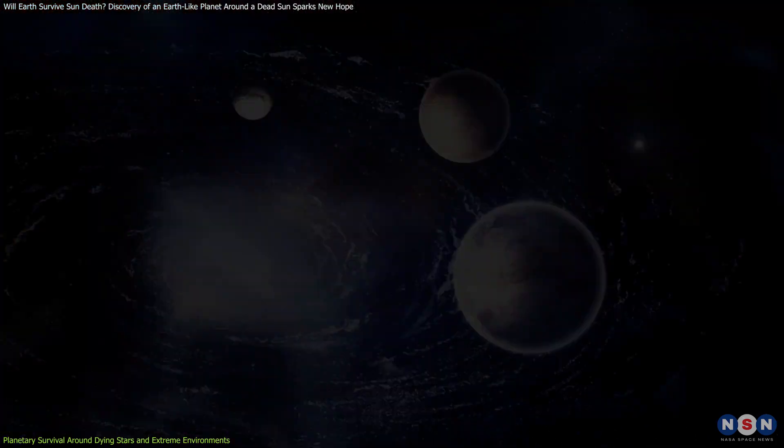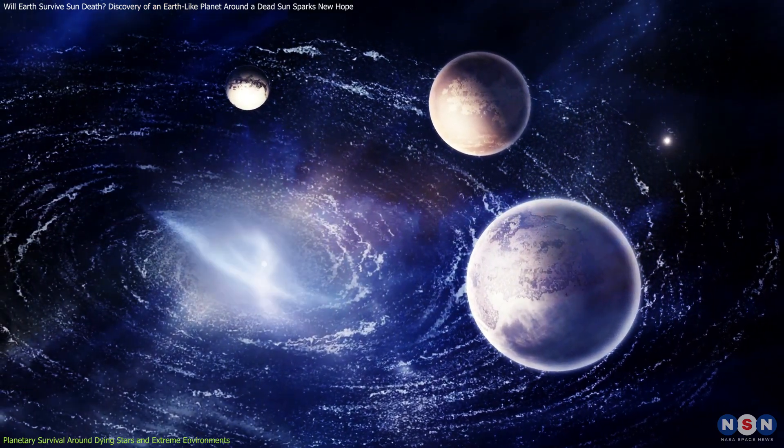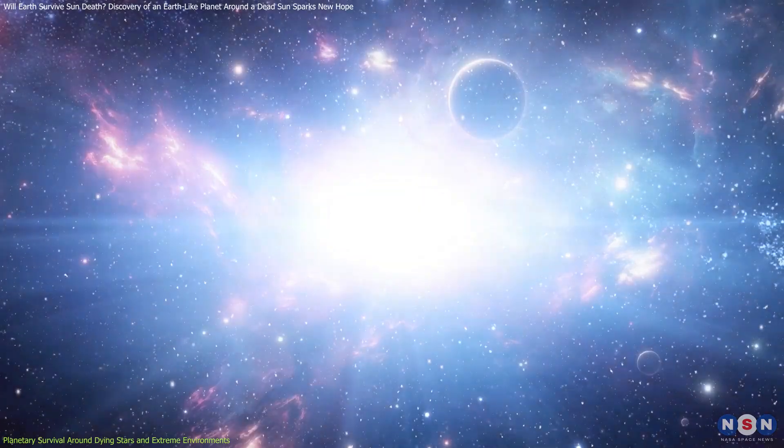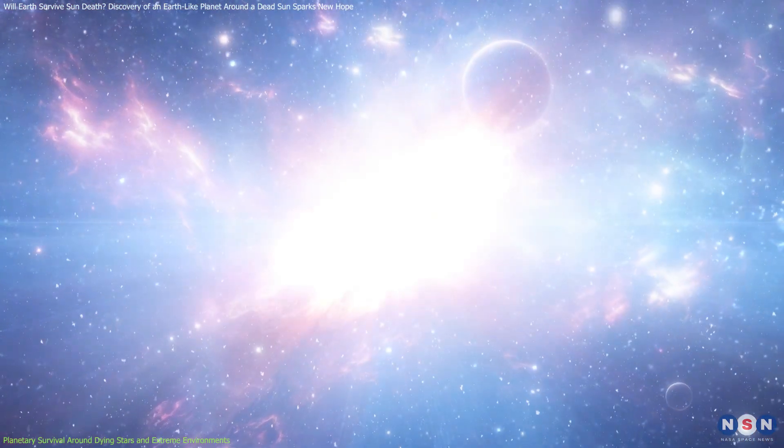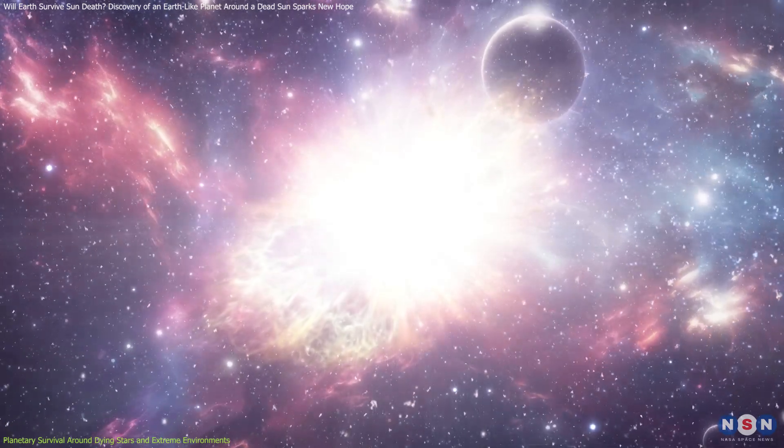For instance, one of the first exoplanetary systems ever discovered orbits a pulsar, a highly magnetized, rapidly rotating neutron star. These planets have withstood supernova explosions and intense radiation, showing that planetary survival can occur under the most extreme conditions.